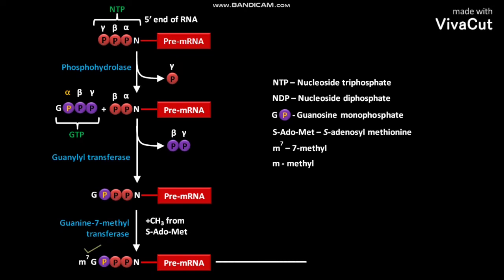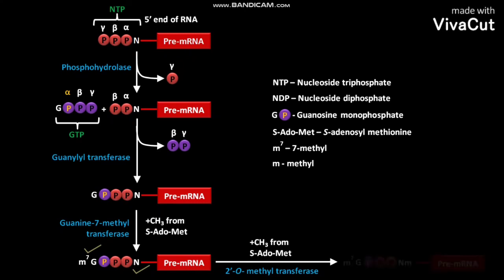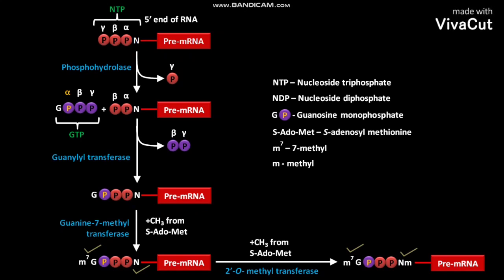In the next step, in the presence of 2'-O-methyltransferase, a CH3 or methyl group from S-AdoMet is added to the ribose sugar of mRNA. As a result, a pre-mRNA or newly formed mRNA having a 7-methylguanosine cap and a methylated ribose sugar is formed. Sometimes, two ribose sugars of the mRNA are methylated by 2'-O-methyltransferase, and in this case the second methyl group also comes from S-AdoMet.